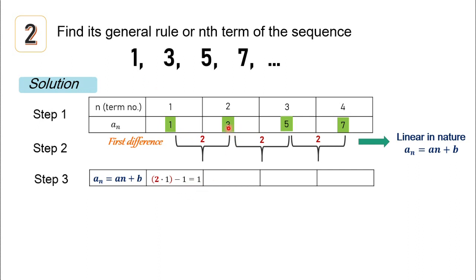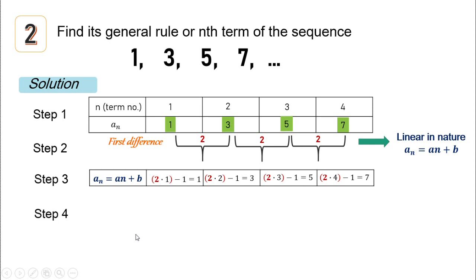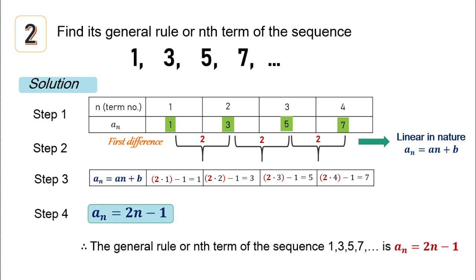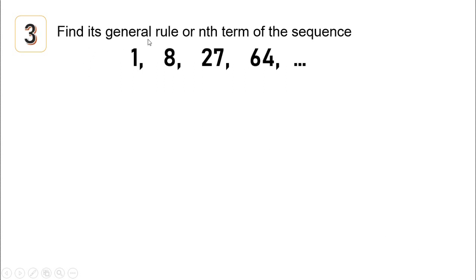We use this expression to get a-sub-2: 2 times 2 minus 1 equals 3. For the third term, 2 times 3 minus 1 equals 5. For the fourth term, 2 times 4 minus 1 equals 7. The expression satisfies all terms in the sequence. Step four: the nth term or general rule is a-sub-n equals 2n minus 1. Therefore, the general rule of the sequence 1, 3, 5, 7 is a-sub-n equals 2n minus 1.